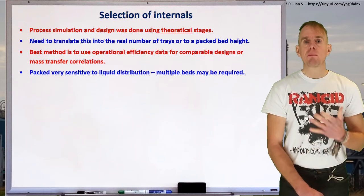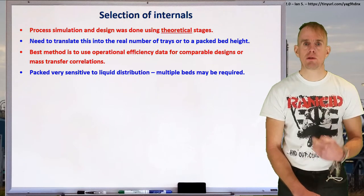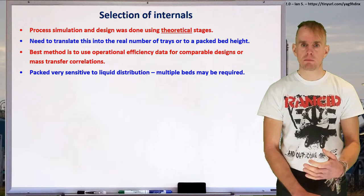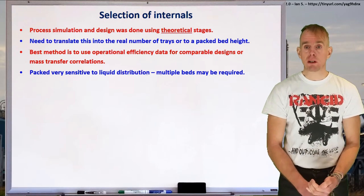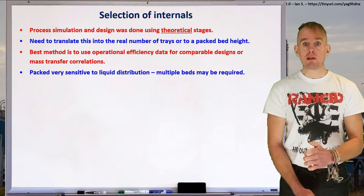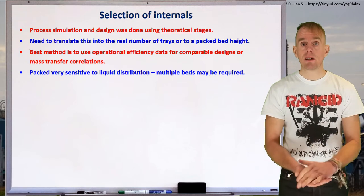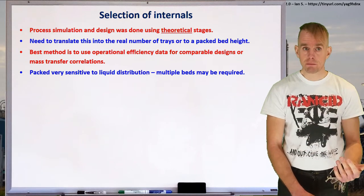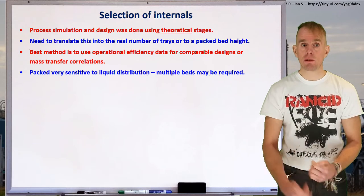Let's think about what goes inside a distillation column. Up to this point we haven't really talked about that. You've done your simulation studies in theoretical stages. A theoretical stage is just an ideal device in which vapor-liquid equilibrium can occur, and it doesn't say anything about what that device is. Now we need to translate those theoretical stages into the real number of trays, or alternatively the height of a number of packed beds.